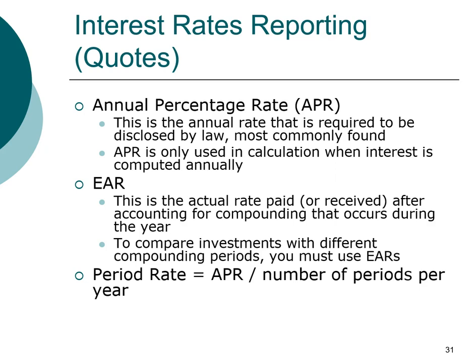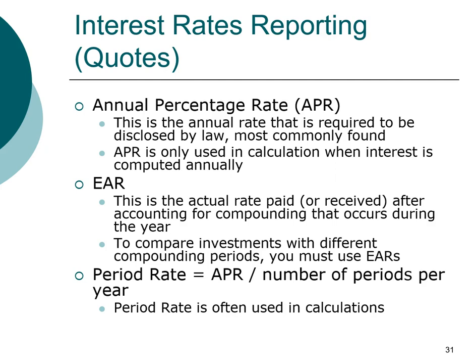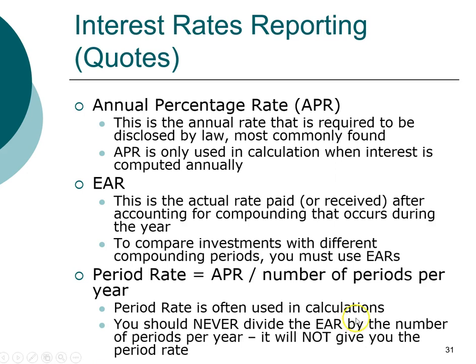Lastly, there is the period rate. This is the interest rate that we'll use in our calculations. Simply put, the period rate is the interest rate per period. For example, if you are given a quotation of 12% APR and the payment is monthly, then your interest rate per month is 12% divided by 12 months per year, or 1% per month. You should never divide the EAR by the number of periods per year, because the effective annual rate already takes into account compounding.